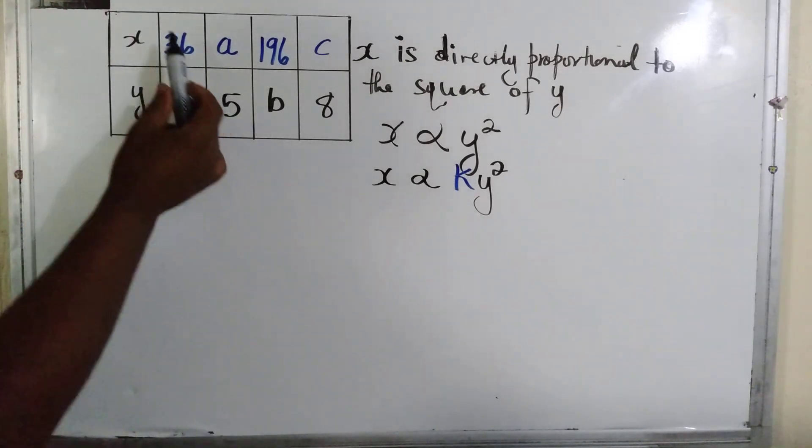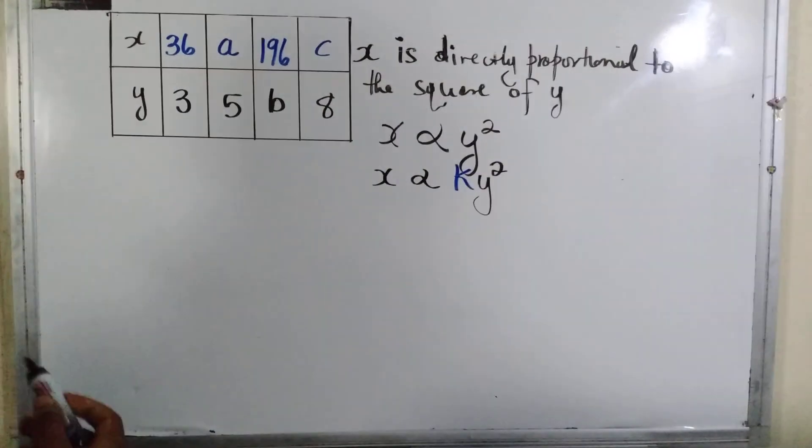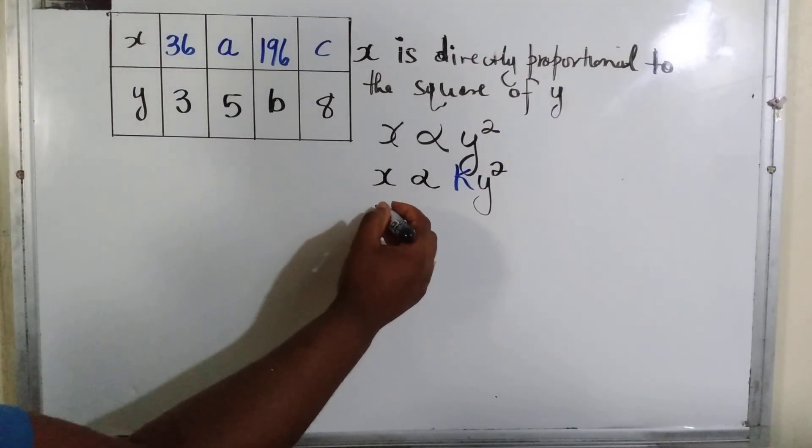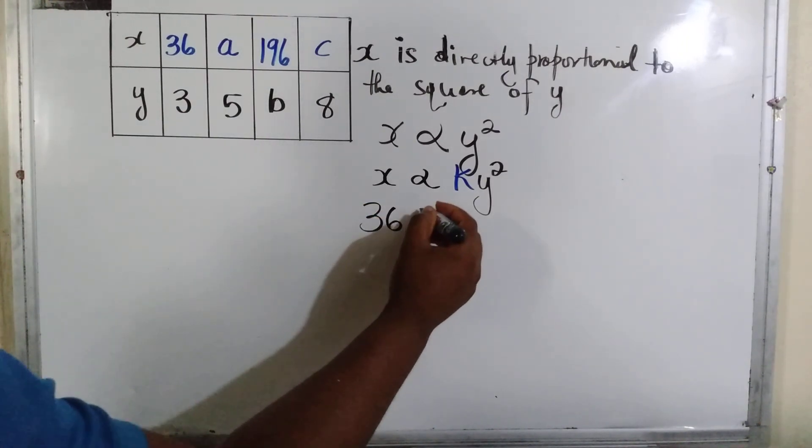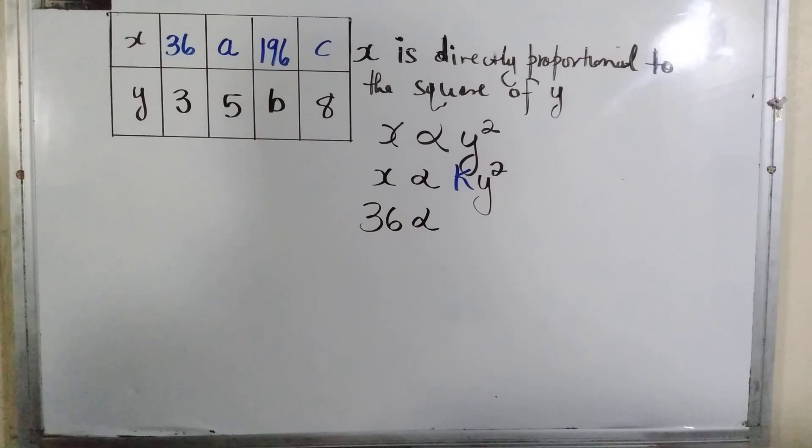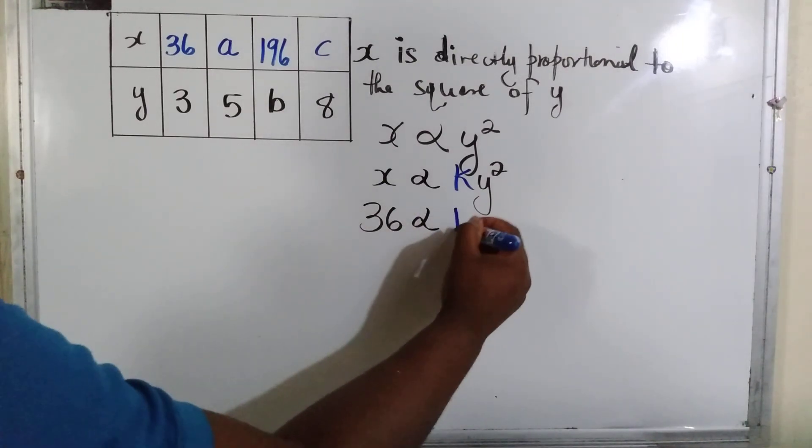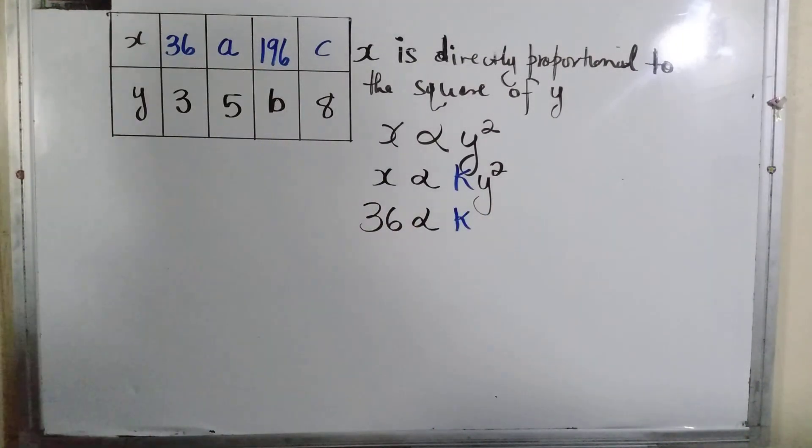We substitute each value to find k because k becomes one unknown. The value of x is 36. We don't know what k is but we put k, and then y squared, which is 3 squared.